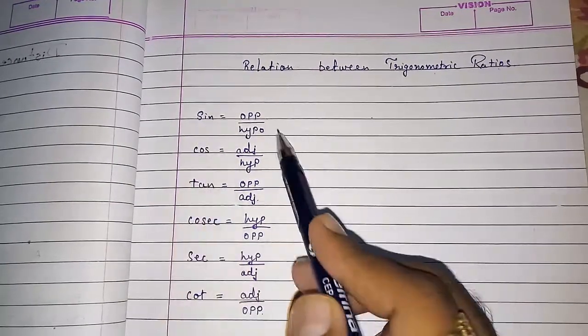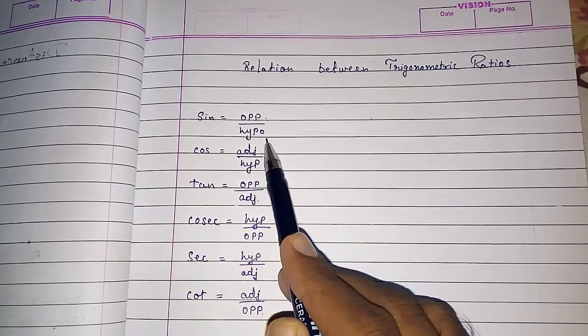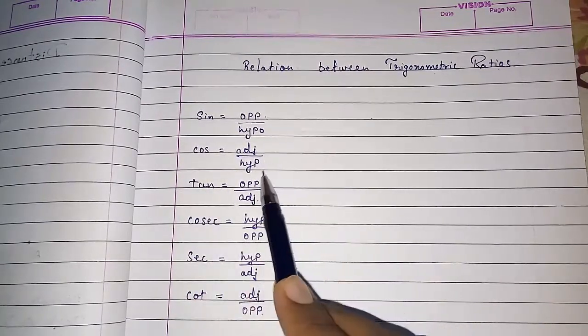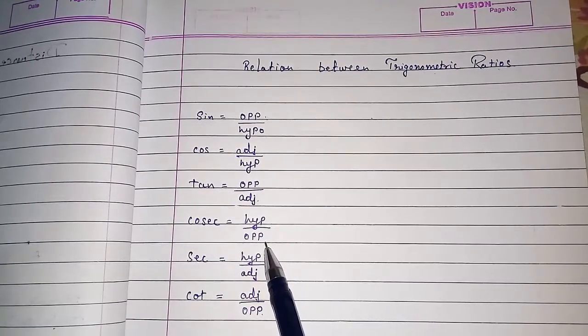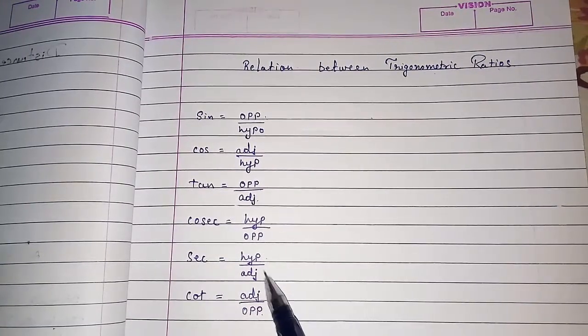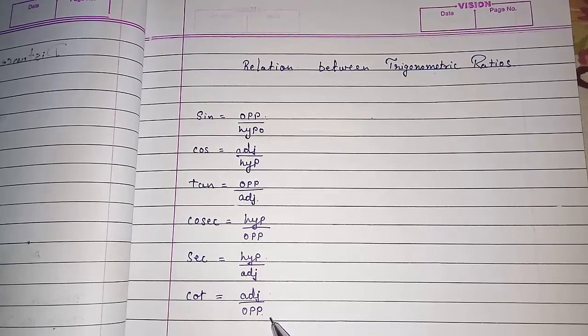When I want to find sin I divide opposite side by hypotenuse, cos adjacent by hypotenuse, tan opposite by adjacent, cosec hypotenuse by opposite, sec hypotenuse by adjacent and cot adjacent by opposite.